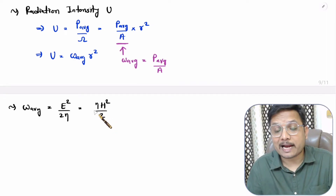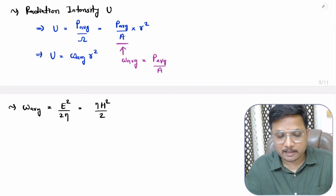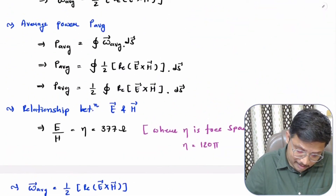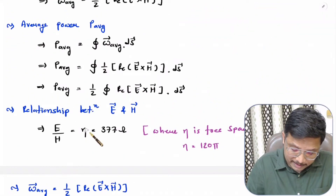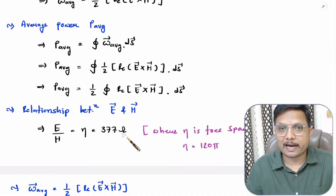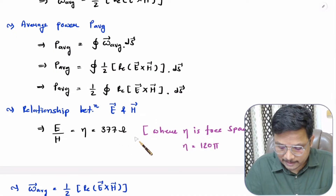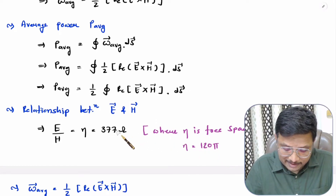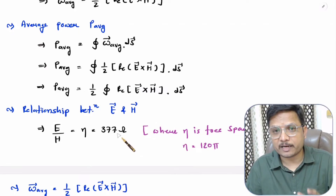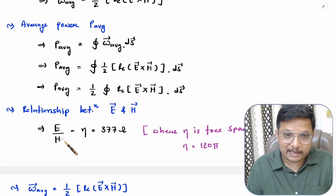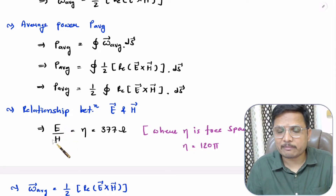Here η is the free space impedance. Its value is approximately 377 ohms — to be precise it is 120π ohms, but the approximated value is 377 ohms. That is free space impedance, and it can be calculated based on electric field and magnetic field, as I have explained in my last video.